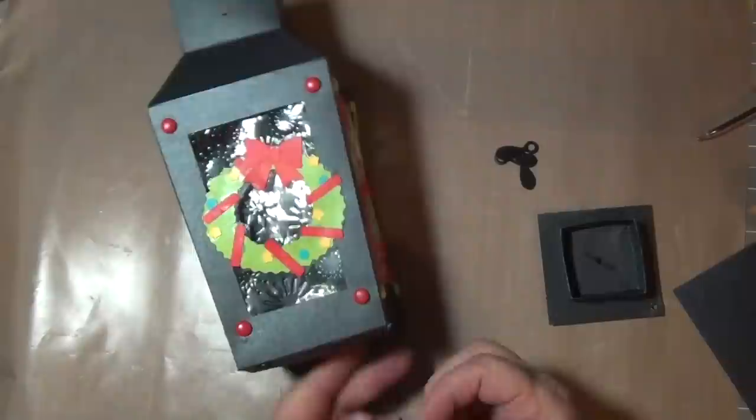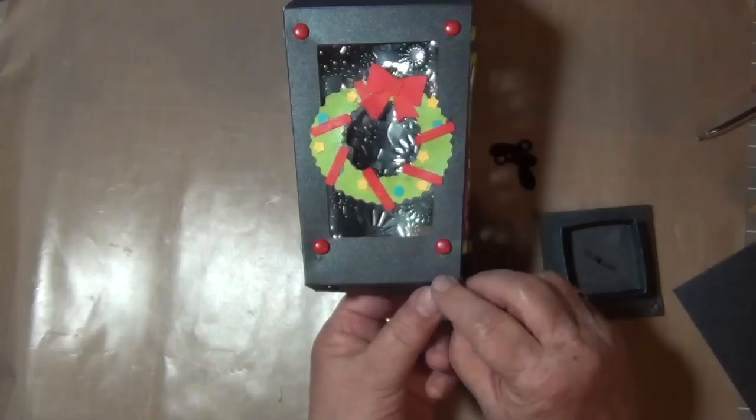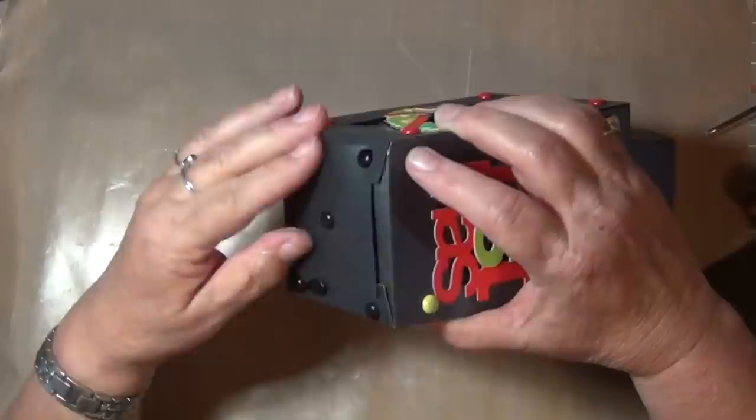This next step is optional. I kind of wanted to make sure that the bottom would not fall out if I lifted the lantern. So I attached one of those little photo tabs, I think that's what they're called, at one of the corners.